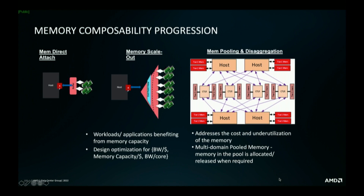If someone says I need a workload which requires five gigabits per second, and if you can't meet that bandwidth, then that application suffers. Hence, scale-out memory using direct attached CXL-capable buffers is the first step.